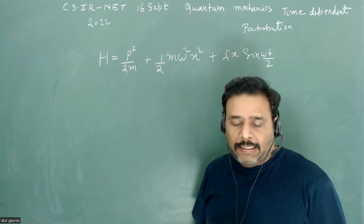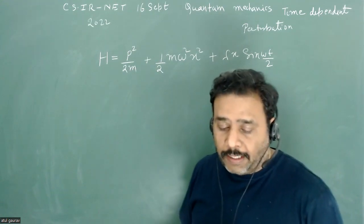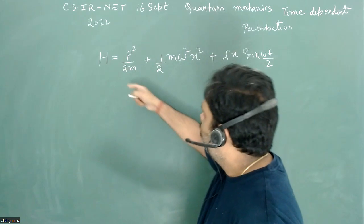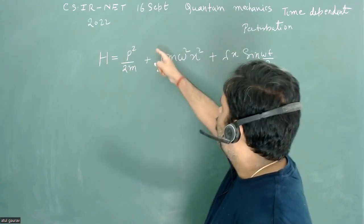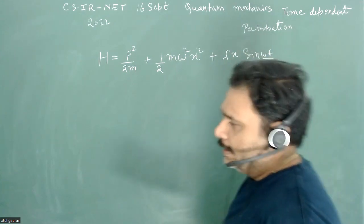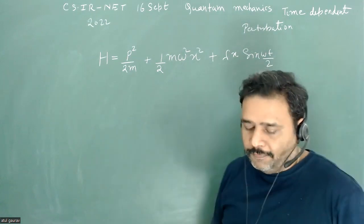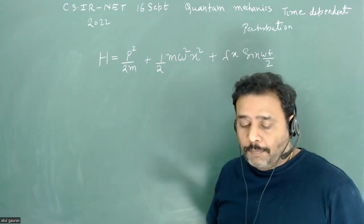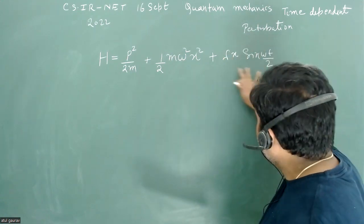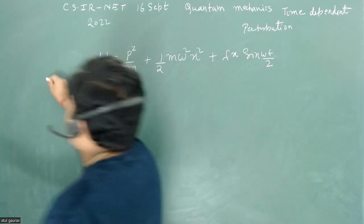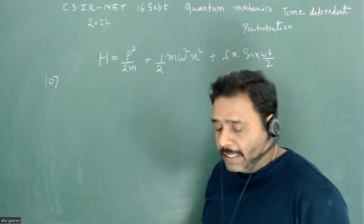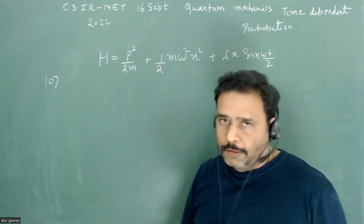At time t equal to zero, the particle is in the ground state of the Hamiltonian. This Hamiltonian contains a harmonic oscillator part plus an additional potential energy which is a function of time and x — a sinusoidal function. Lambda and omega are some positive constants.